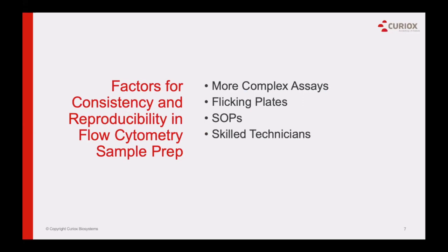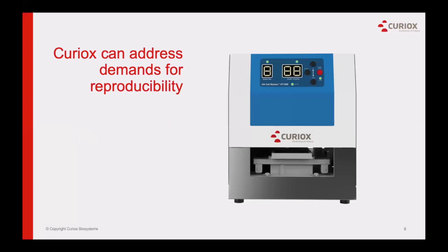We've heard from many pharma and biotech companies that it's a challenge to train and retain skilled personnel who can perform assays reproducibly. Other factors include the trend of increasingly complex assays, such as mass cytometry experiments and high-plex fluorescent immunophenotyping assays. Also, flicking plates is an inconsistent function in itself, and many EH&S departments are requesting that users stop this practice to reduce aerosolization of samples. The laminar wash cell washer can minimize many of these challenges.